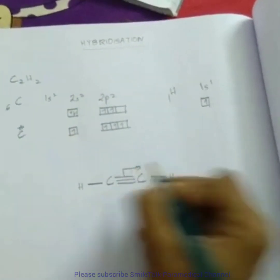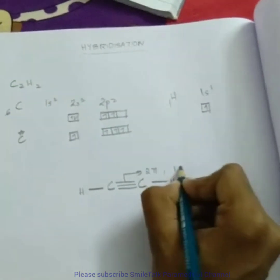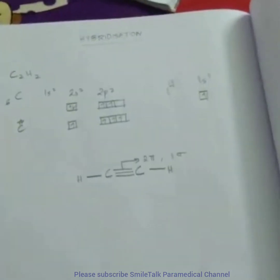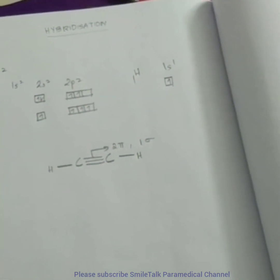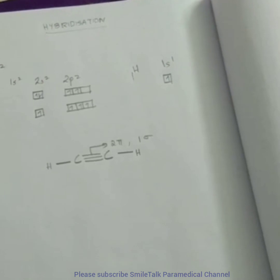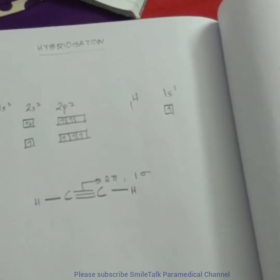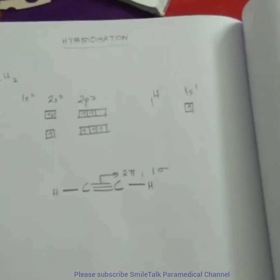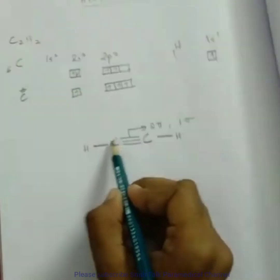In a triple bond we will be having two pi bonds and one sigma bond. So we require two hybrid orbitals because one carbon atom is surrounded by two sigma bonds.